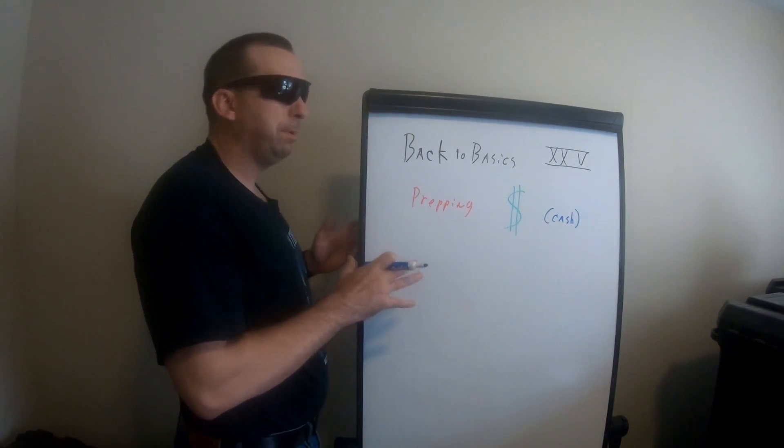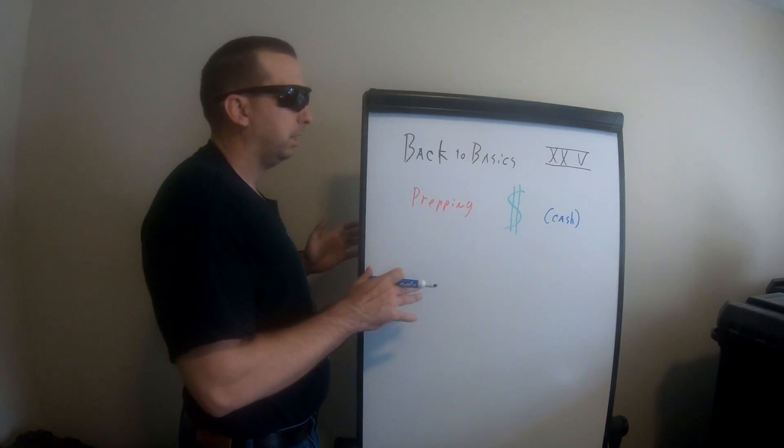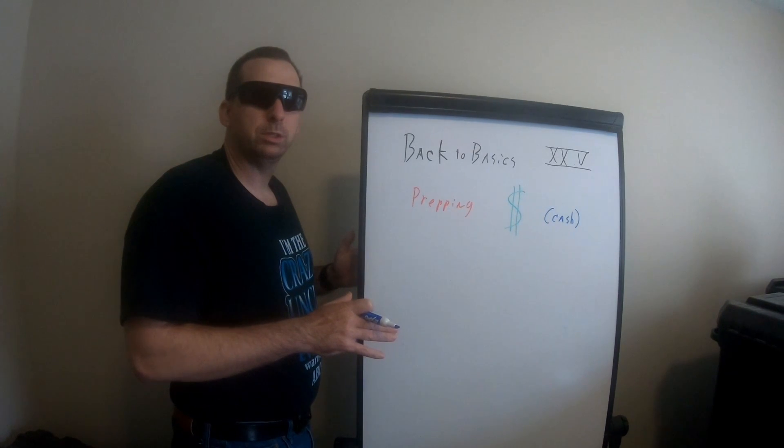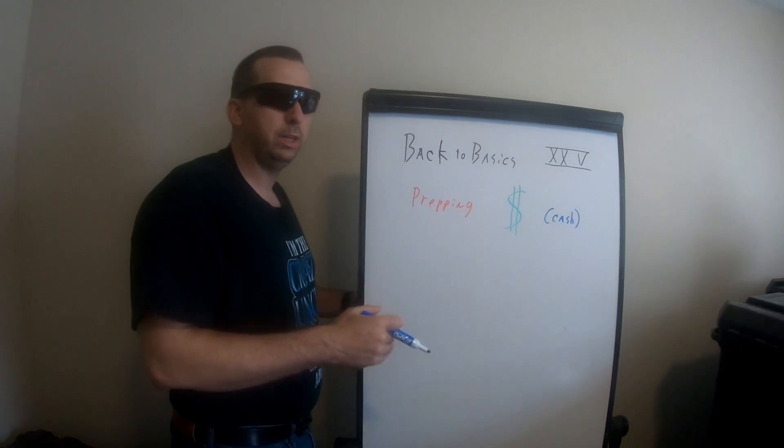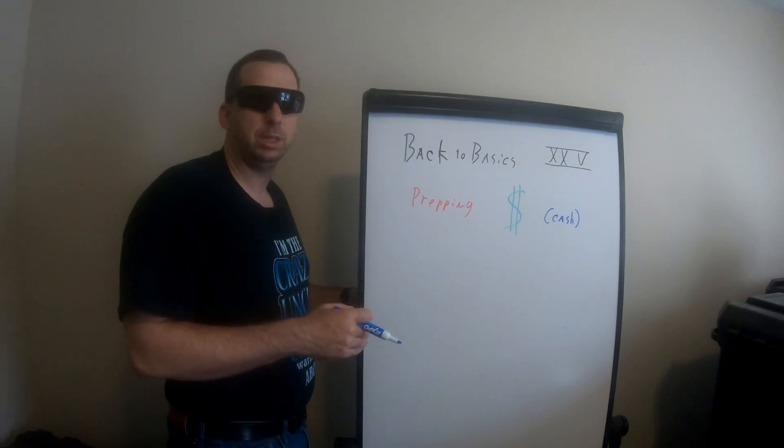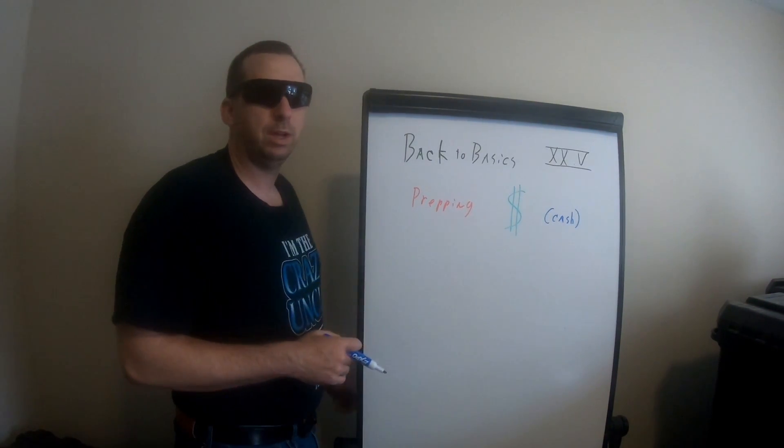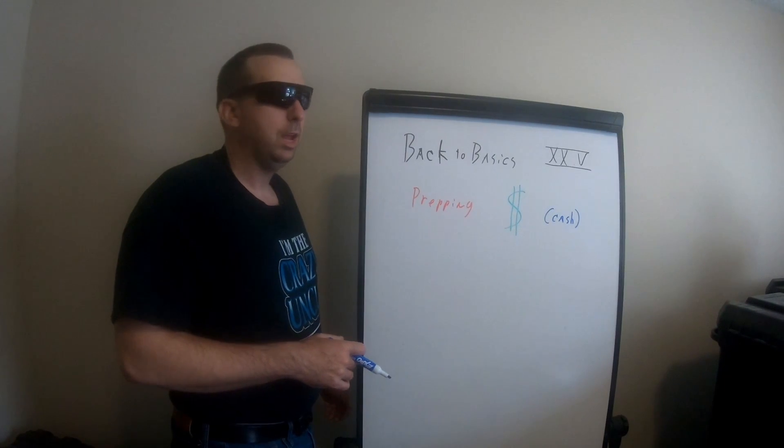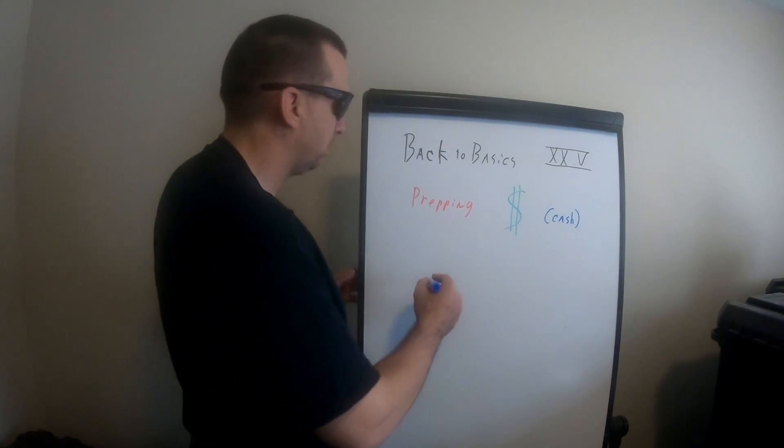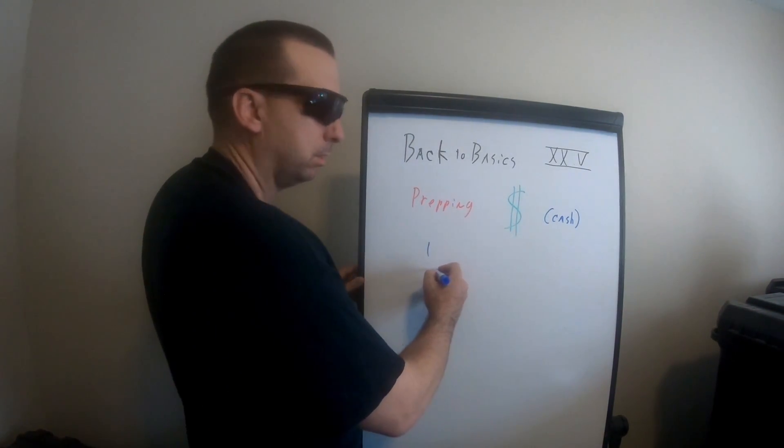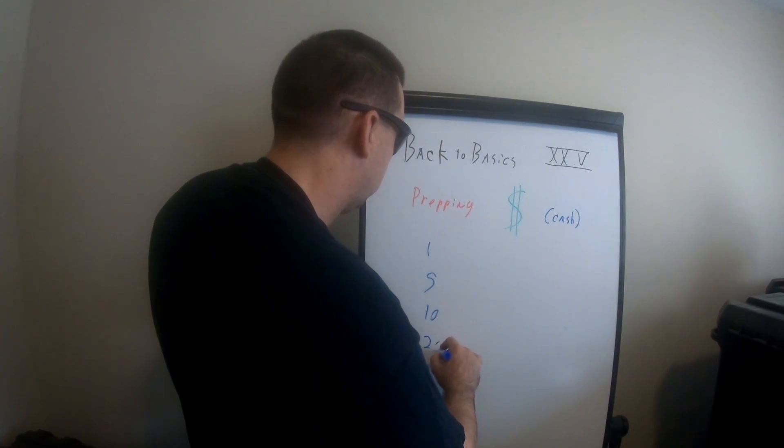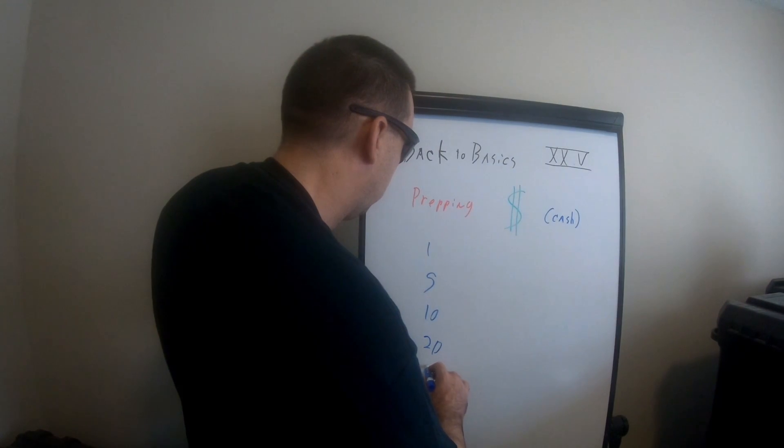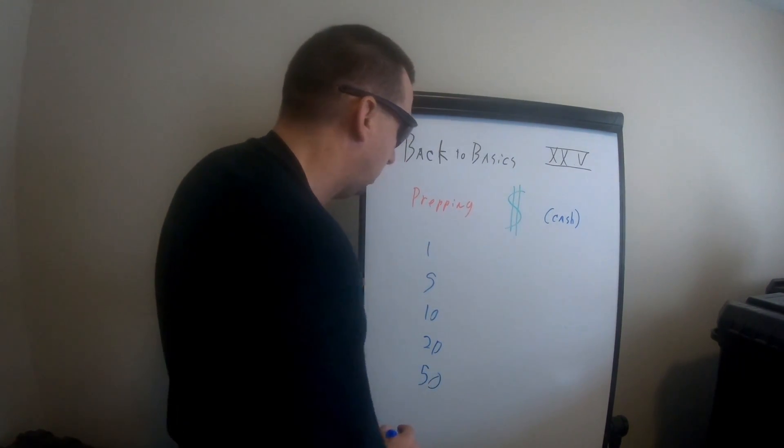Regardless, when prepping cash, you don't have to do this all at once. I want you to understand that it takes a while. It will take you about three to four months to get this down unless you have a lot of disposable income. And it's real simple. We're just going to go: you got your ones, your fives, your tens, your twenties, and your fifties.